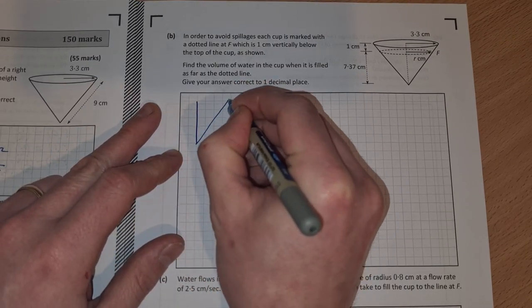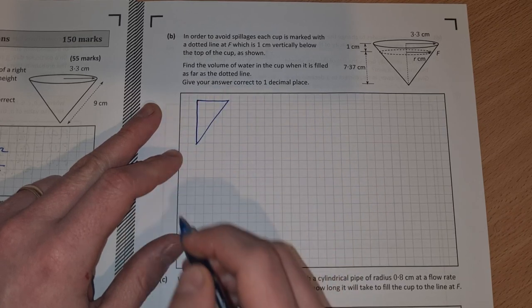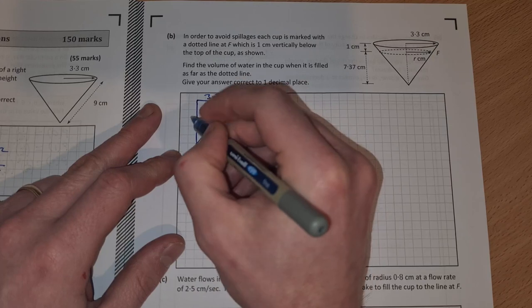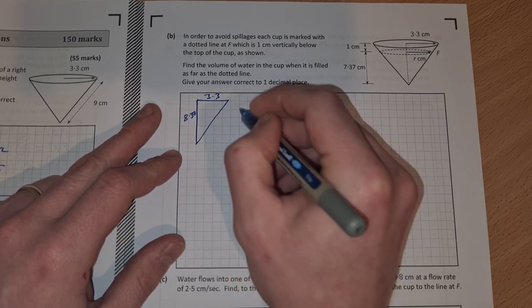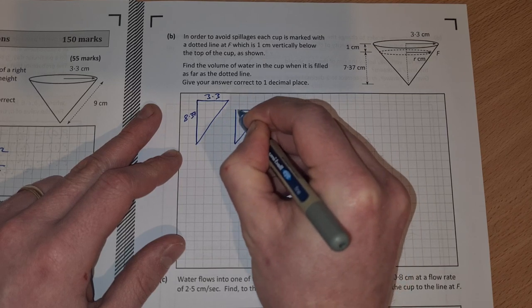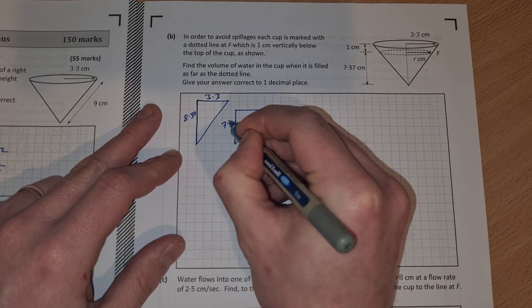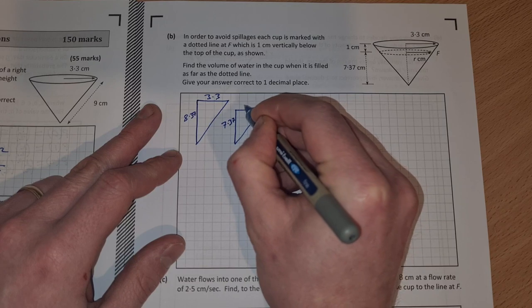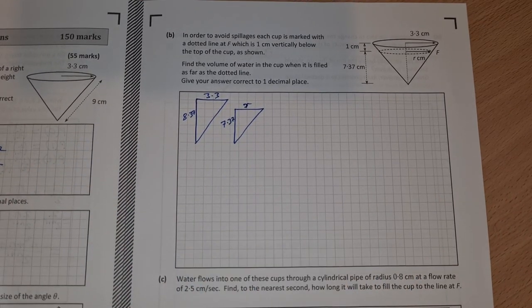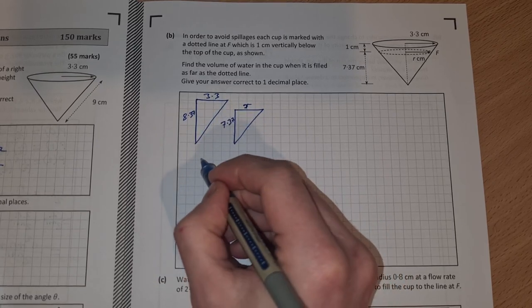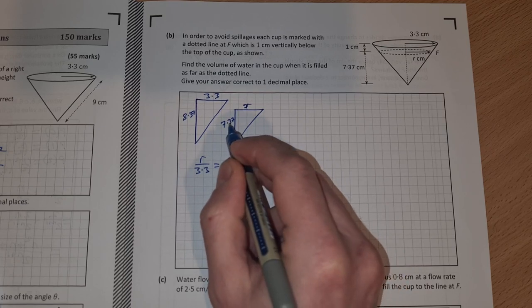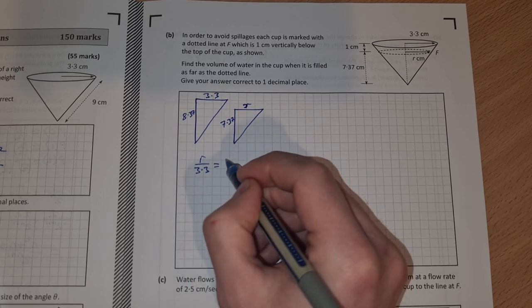I'm going to draw a sketch of the cup in total. We have 3.3 and we have 8.37, and then we have the smaller version here where it's 7.37 and this is r. We want to find what is this r. We can use similar triangles: r over 3.3 equals 7.37 over 8.37.